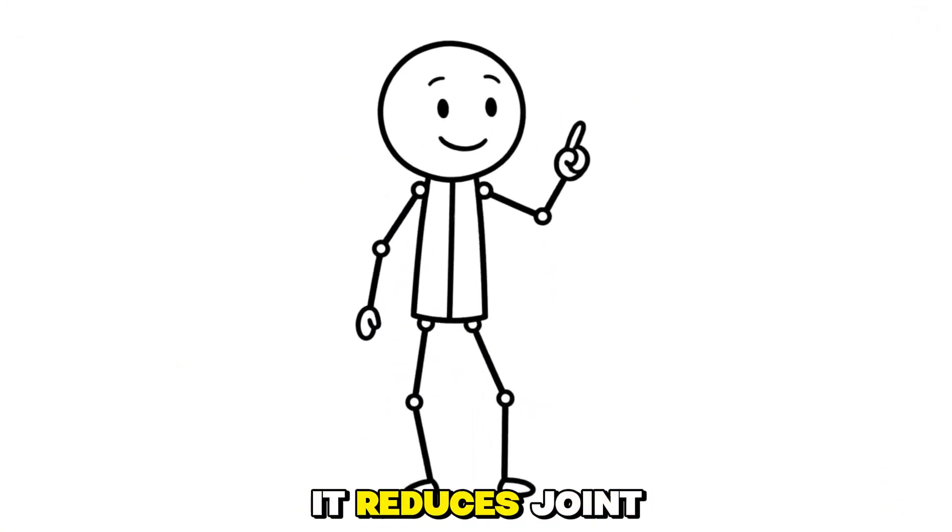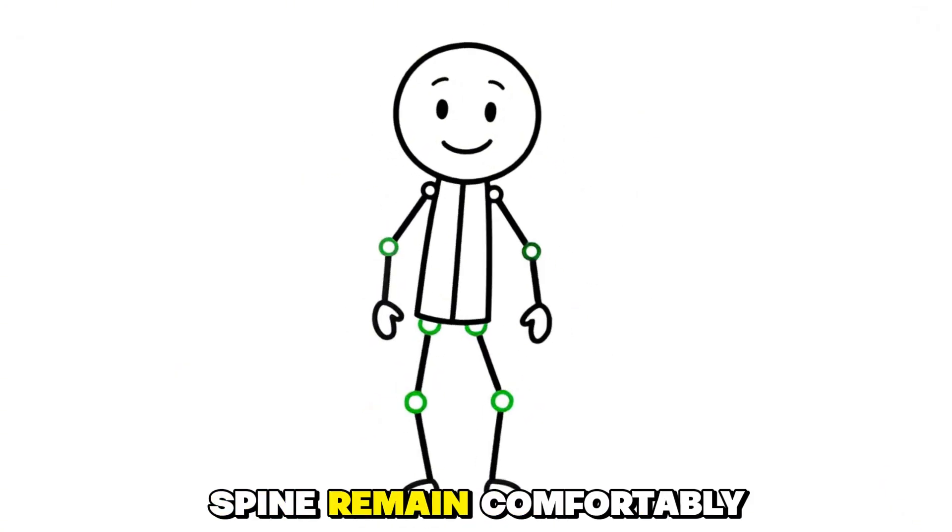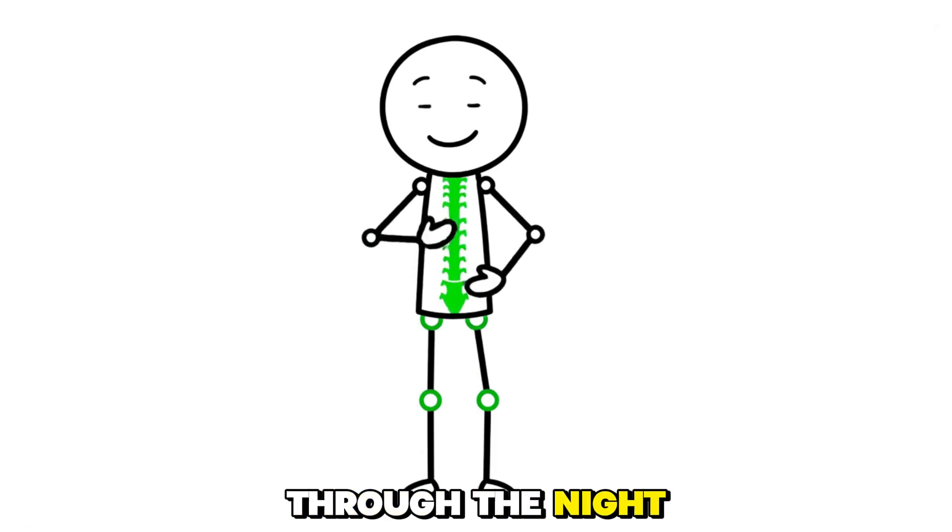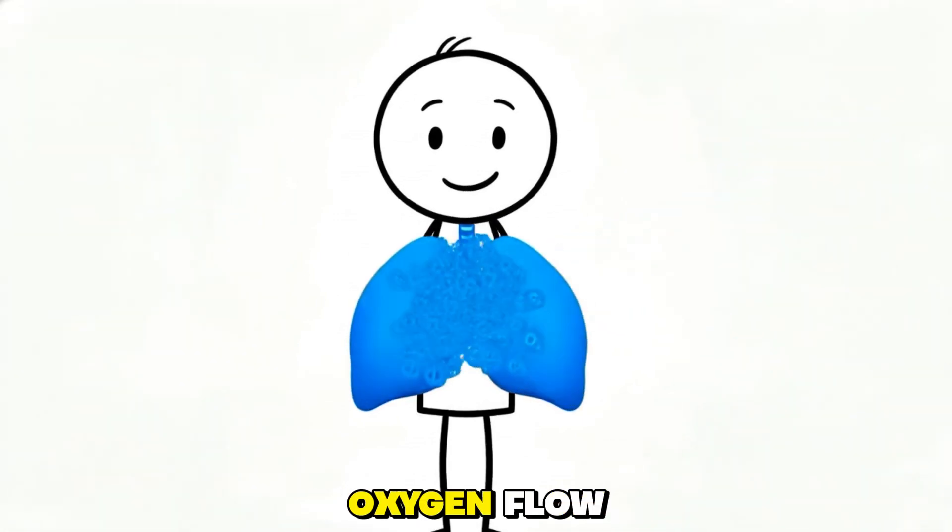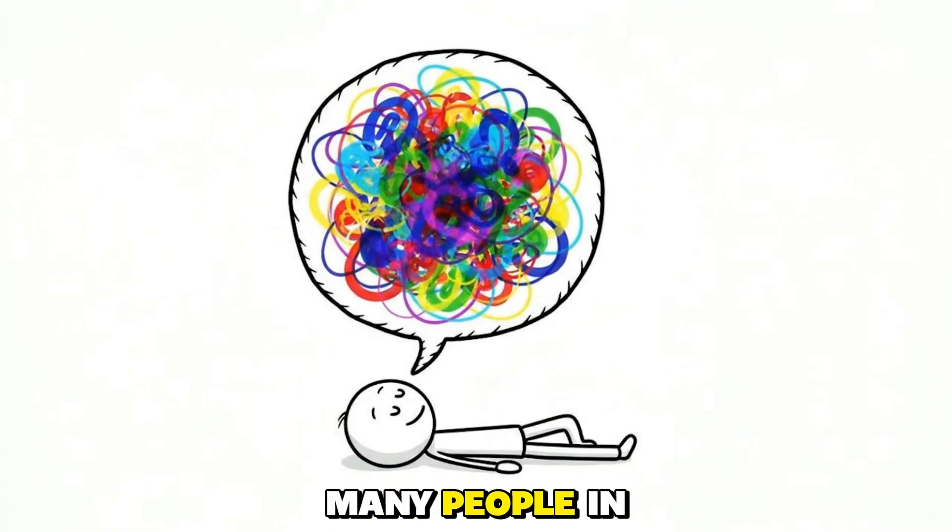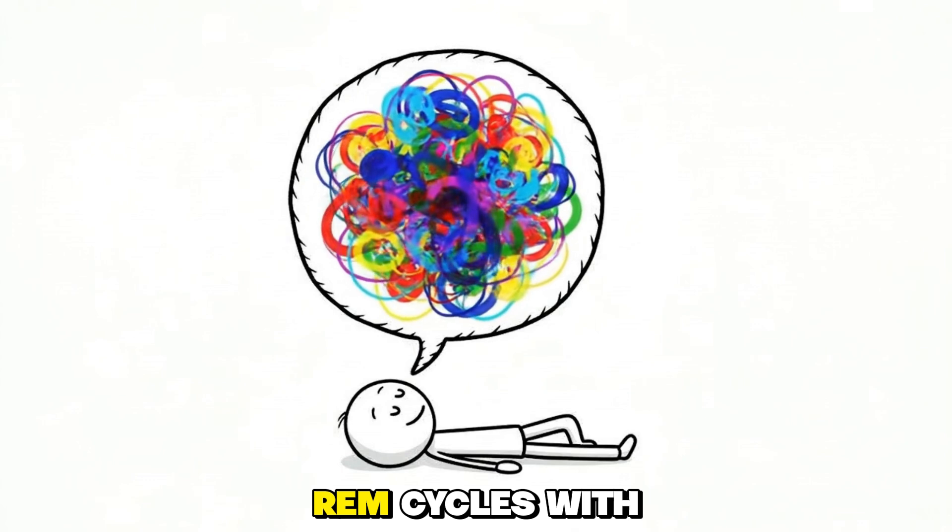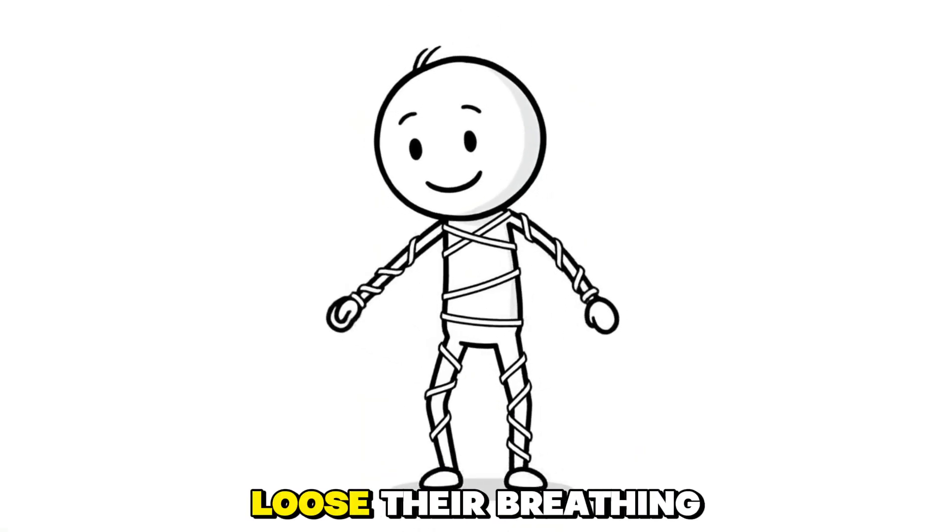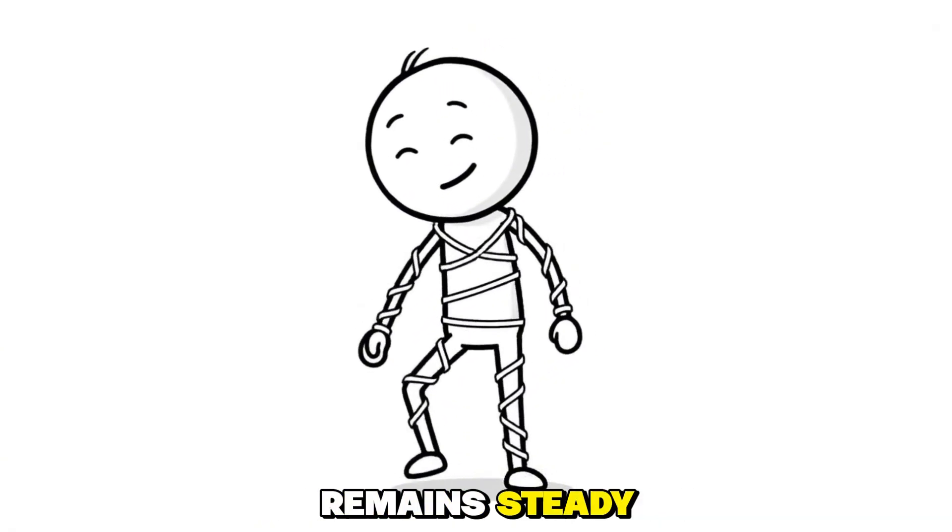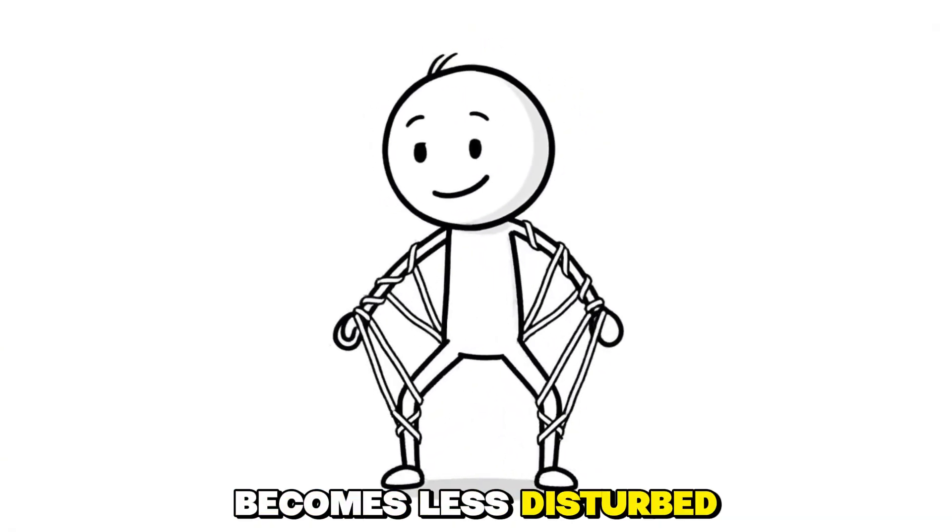It reduces joint compression and helps the spine remain comfortably neutral through the night. The lungs gain more space, allowing smoother breathing and more stable oxygen flow. Many people in this posture drift into deeper REM cycles with fewer micro-awakenings. Their muscles stay loose, their breathing remains steady, and their sleep becomes less disturbed.